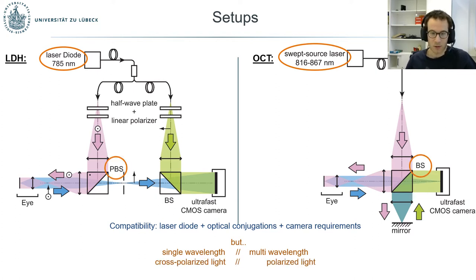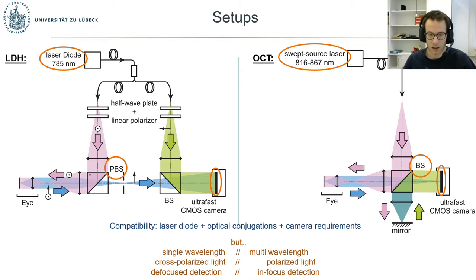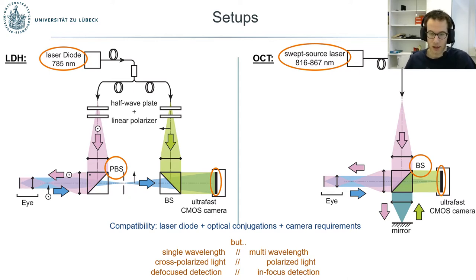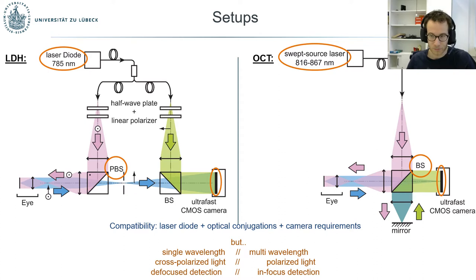LDH has so far been demonstrated with cross-polarized light to remove the specular reflection from the cornea. More importantly, LDH has been demonstrated in a defocused detection, meaning the camera is voluntarily set backward by a few centimeters so that one area of the eye is imaged over multiple pixels rather than a single pixel. This stands in contrast with OCT, which uses focused detection where one pixel corresponds to one area on the eye.